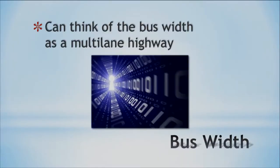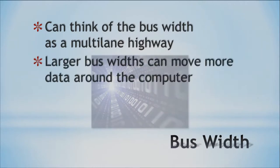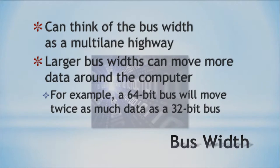Think of bus width more like a highway than a bus. Think of a multi-lane highway — somewhere like LA or Mexico City — where they have huge highways. A larger bus width means you can move more data around in a computer. Four lanes moving traffic handles a lot more cars than a two-lane road or a one-lane dirt road. So if you have 64 bits, that's a lot more bits moving on the bus line than 32 bits.